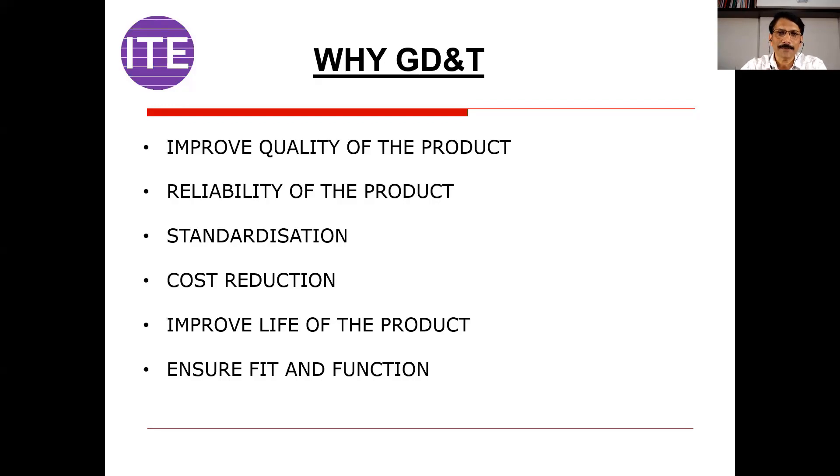Why GD&T? Let's take one example. Say we have a component of diameter 6 that we want to manufacture. The initial process may be turning, then grinding. When we produce this component, we have to fit it in a particular assembly. Imagine 100 components manufactured with a tolerance of plus or minus 0.1. When checked, all components are within the limit — in the acceptable zone — but when going for assembly, there are some fitment issues.